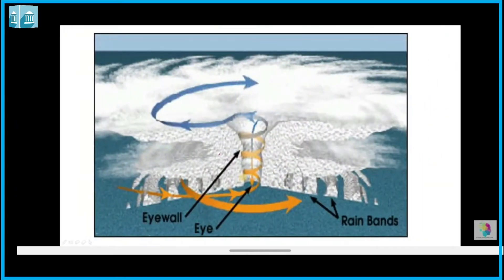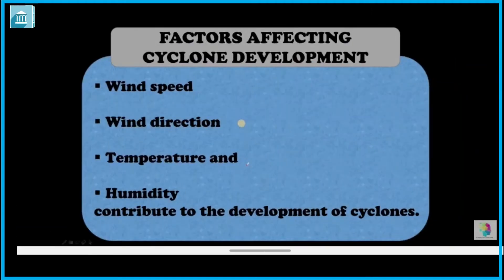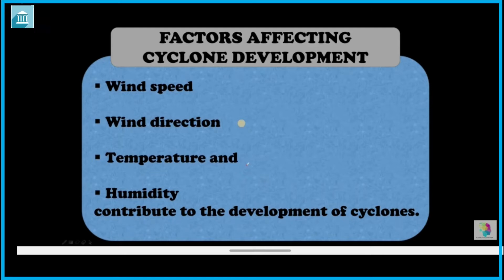In the center, where the eye is marked, there is low pressure. Clouds form and rotate around it — those are the high pressure winds. The factors that affect cyclone development are obviously wind speed, wind direction, temperature, and humidity.